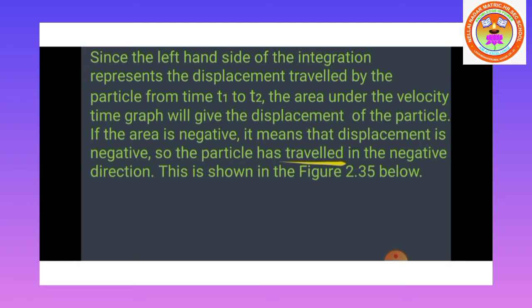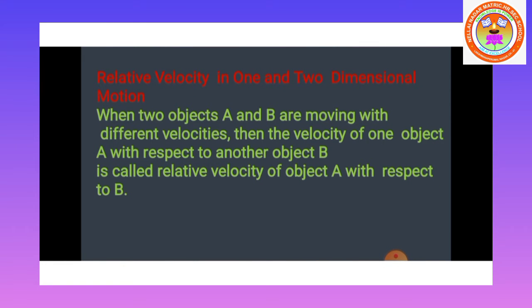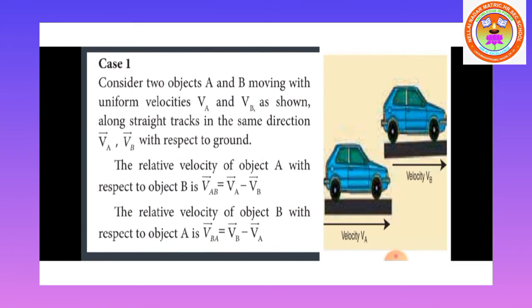Next: relative velocity in one and two dimensional motion. Relative velocity means: when two objects A and B are moving with different velocities, the velocity of object A with respect to another object B is called the relative velocity of object A with respect to object B.